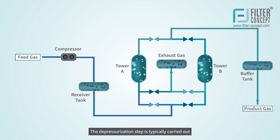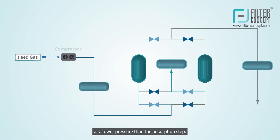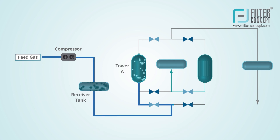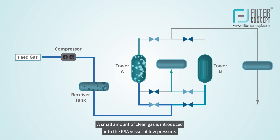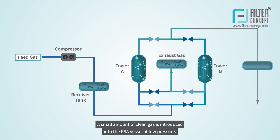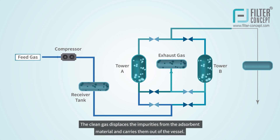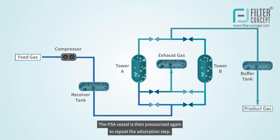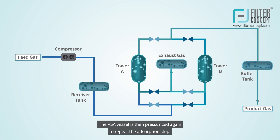The depressurization step is typically carried out at a lower pressure than the adsorption step. To remove any remaining impurities from the adsorbent material, a small amount of clean gas is introduced into the PSA vessel at low pressure. The clean gas displaces the impurities from the adsorbent material and carries them out of the vessel. The PSA vessel is then pressurized again to repeat the adsorption step.